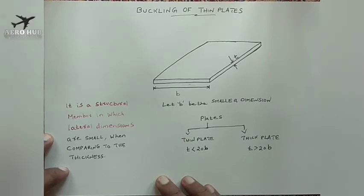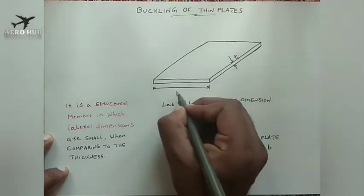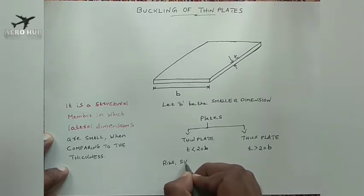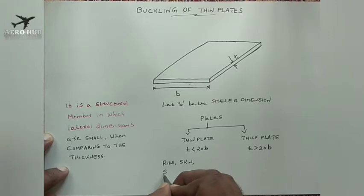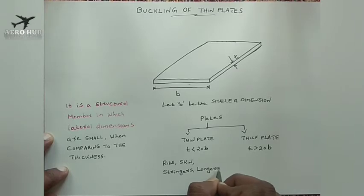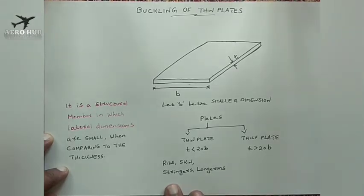Thin plate has more application in airframe structures when compared to thick plate. We can see the applications of thin plates — for example, thin plates are used in ships and it is used in the skin of aircraft as well as stringers and longerons.